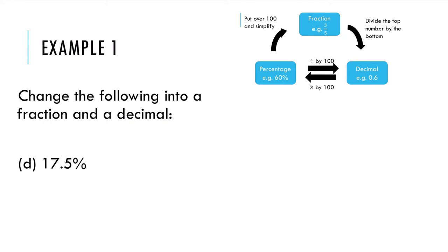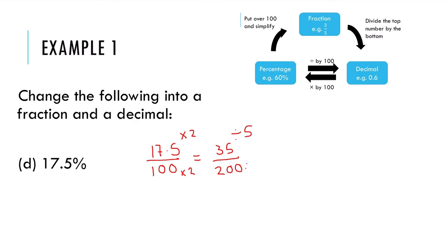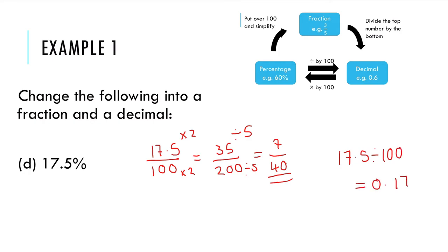Our last one here is a little bit different because we have a decimal in our percentage. I'm still going to put it over 100, and again if you pop this in your calculator it will simplify it for you. If you had to do this non-calculator, what we usually do with a 0.5 is multiply by 2 first to get rid of that decimal. So I would take it back to whole numbers by doubling everything, which gives me 35 over 200. Then I can see that these are both in the 5 times table, so that gives me 7 over 40 — but again you can use your calculator to do that. 17.5 divided by 100 gives me 0.175 as a decimal.